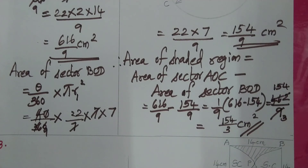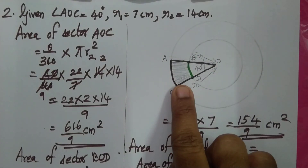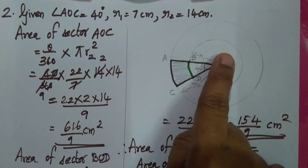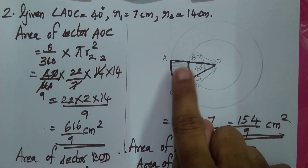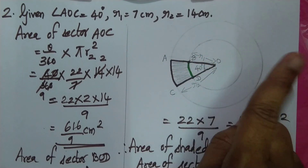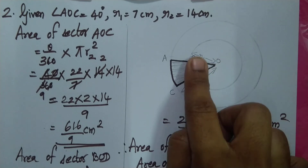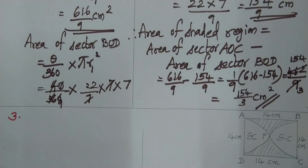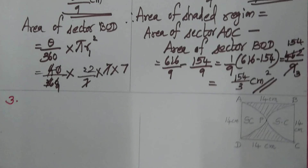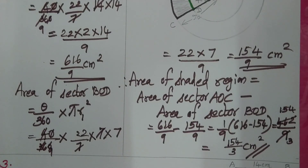The final answer for the shaded region is 154 by 3 cm². We found this by subtracting the area of the smaller sector BOD from the larger sector AOC. The minus operation removes the inner sector, leaving only the shaded ring portion between the two concentric circles.